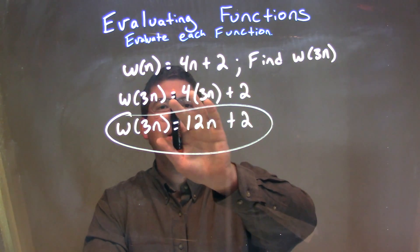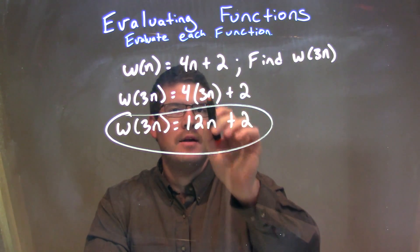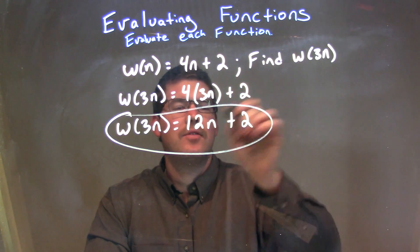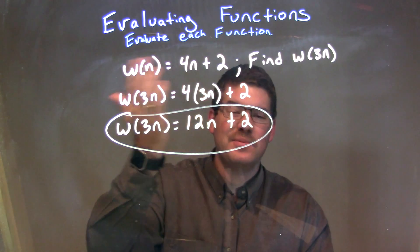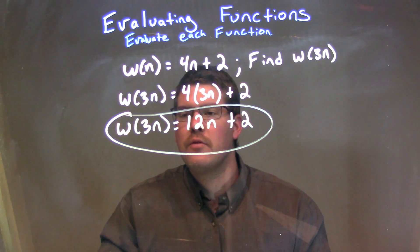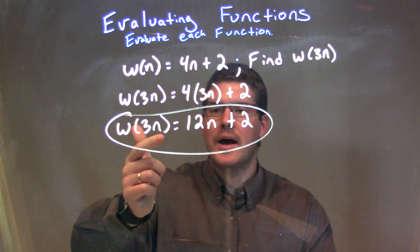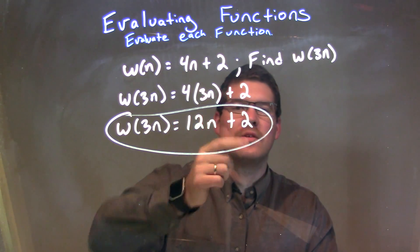So, we have w(3n) here is equal to 4 times 3n, for that n, 3n, plus 2. Then, we simplify. 4 times 3n is 12n, we brought down the 2, and that's basically it. So, our final answer here is just w(3n) is equal to 12n plus 2. So, let's do it.